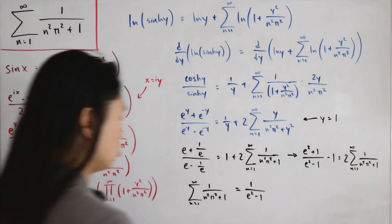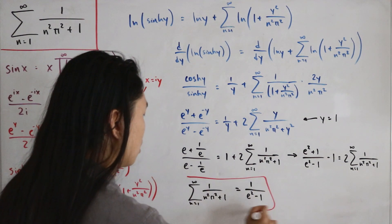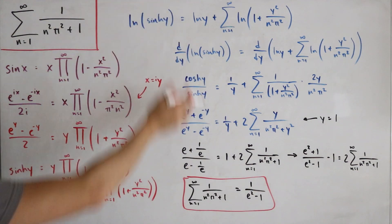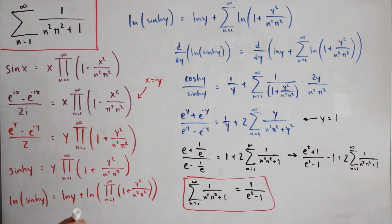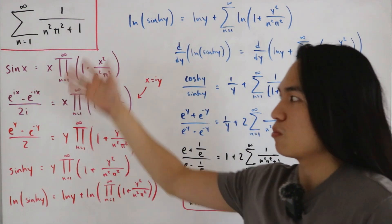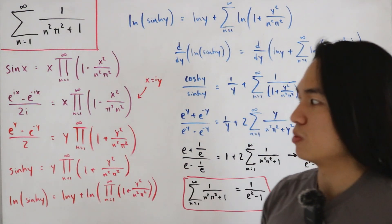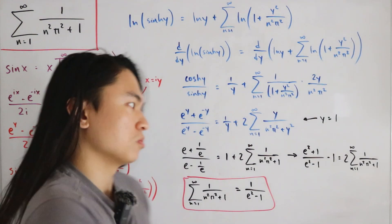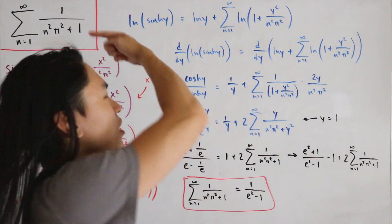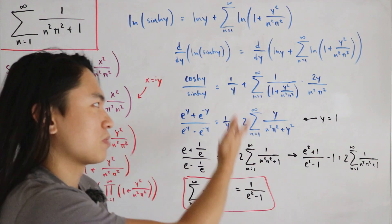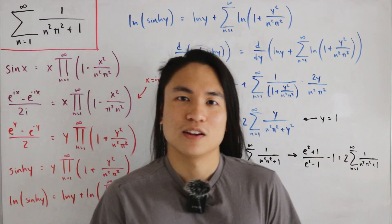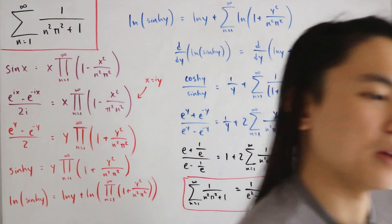And that is our final answer: the infinite sum equals 1 over (e squared minus 1). We achieved this using hyperbolic functions, some calculus and derivatives, and Euler's infinite sine product — a beautiful approach, and pretty cool if you ask me.